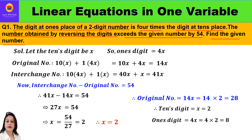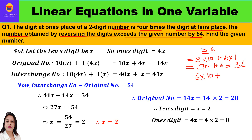Quick revision: suppose I have the number 36. It consists of two digits — 3 and 6. It is formed because 3 is in the tens place, so I multiply 3 with 10, and 6 is in the one's place, so I multiply 6 with 1, giving 30 + 6 = 36. If I interchange the digits, 6 is multiplied by 10 and 3 by 1, giving 60 + 3 = 63. So the reversed number is 63.